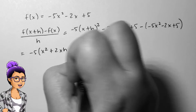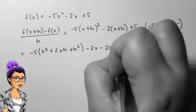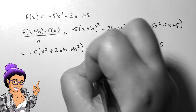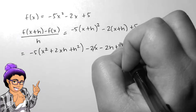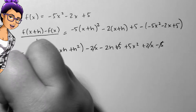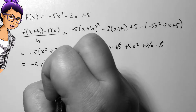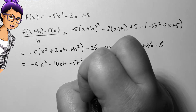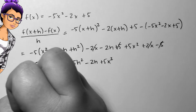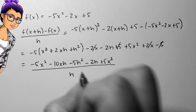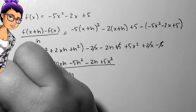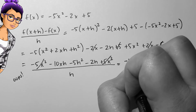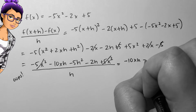I can use the foiling technique and distribute any terms as needed in my next step. Don't forget the h in the denominator. As I go, I'll combine like terms, which ends up having a lot of things canceling out with others. After all of this, I should get negative 10xh minus 5h squared minus 2h, all over h.